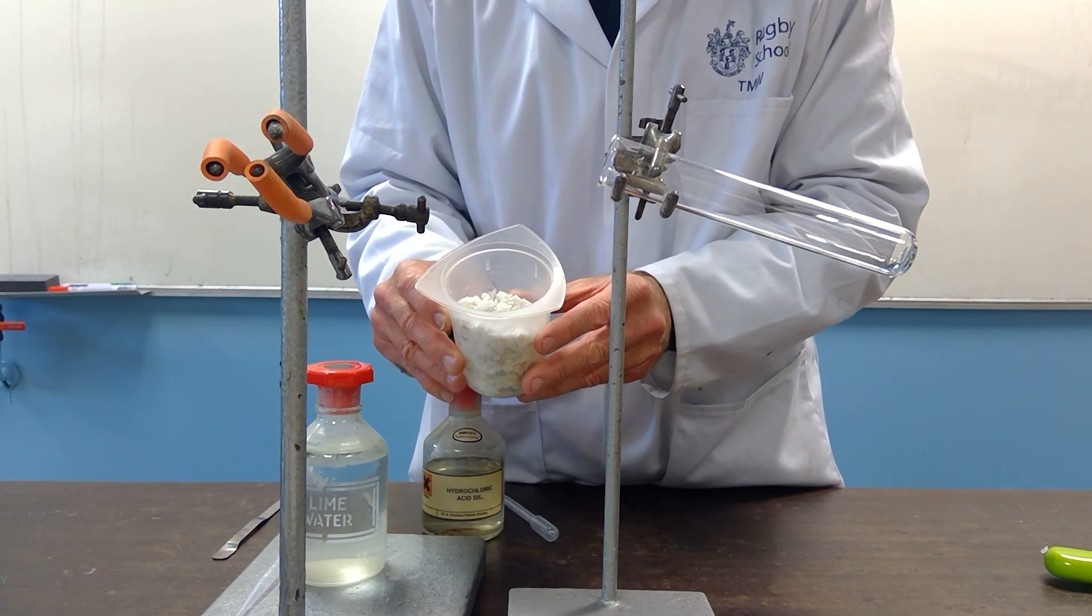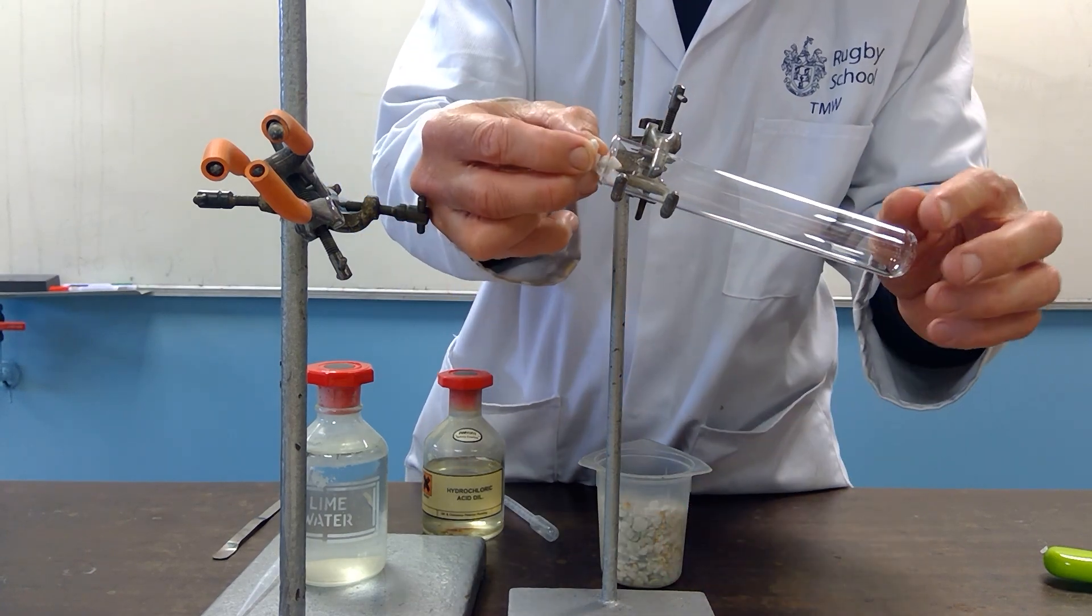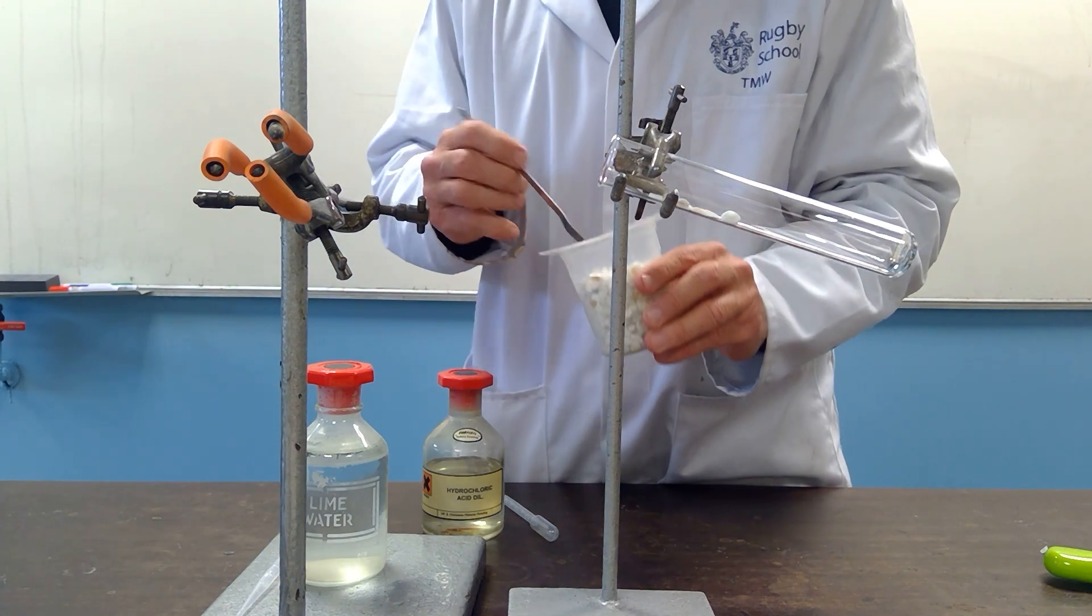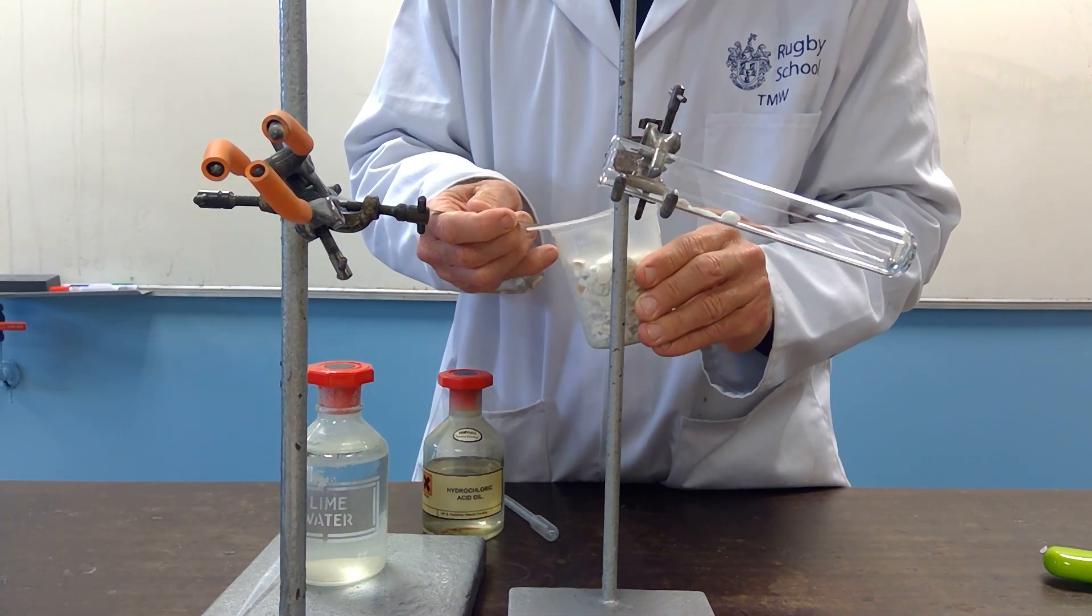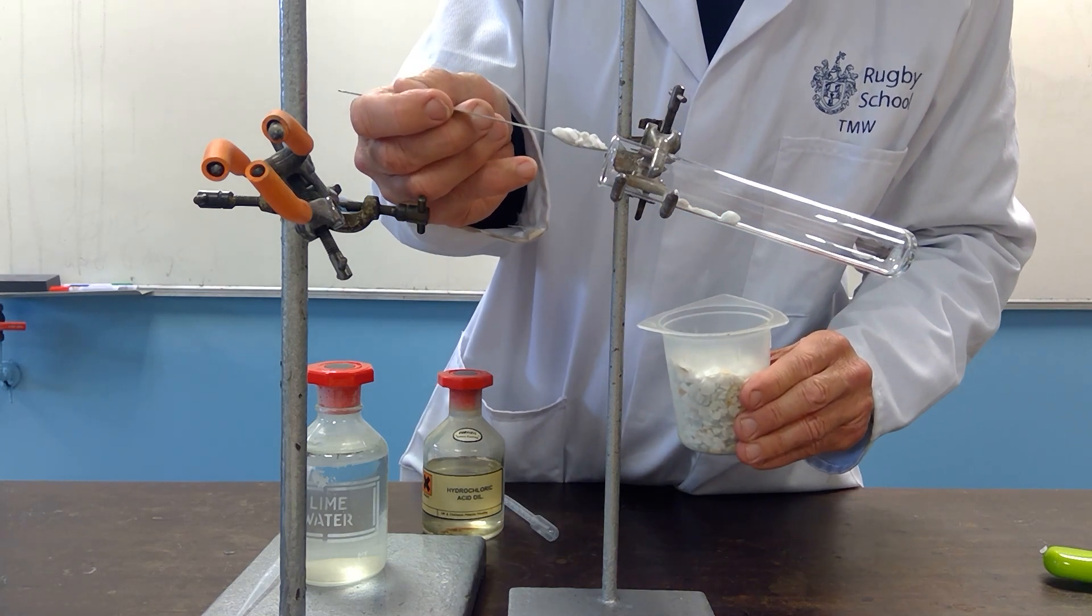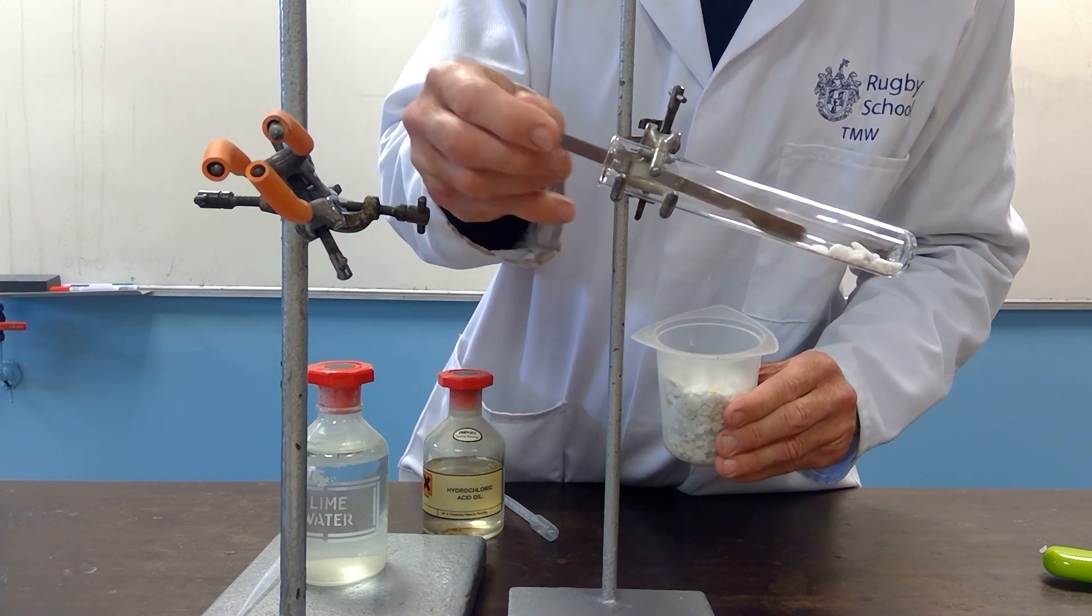So this time not copper carbonate, but we're going to use calcium carbonate. This time we do not need to heat. I'll just put a few bits of the calcium carbonate into the boiling tube. That will be plenty of excess.